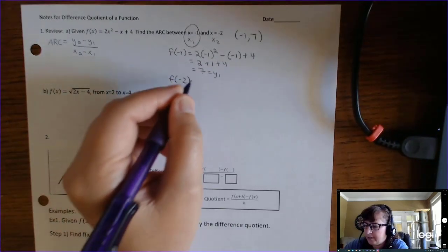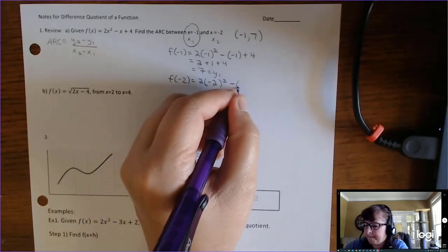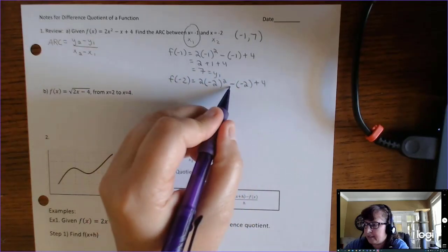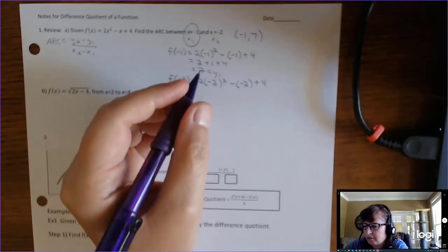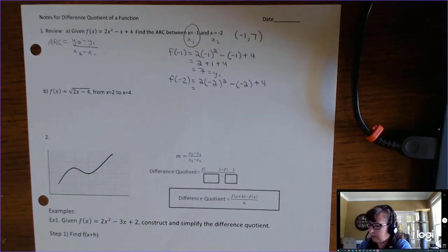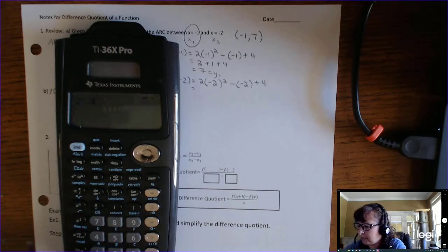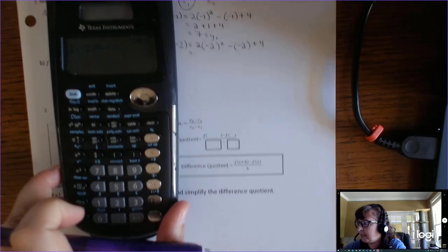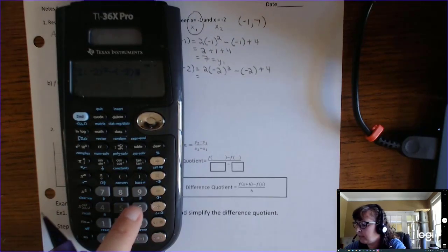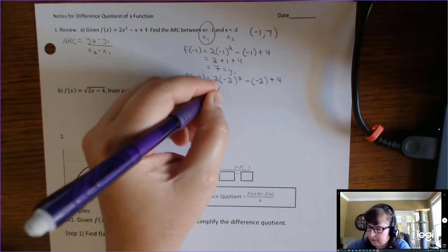Now we need to find f of negative 2. The minus out here belongs to the function; the negative inside the parentheses belongs to the input — parentheses are helpful. You can plug it into your calculator: 2 times negative 2 squared minus negative 2 plus 4, which gives 14. So that's our y2.